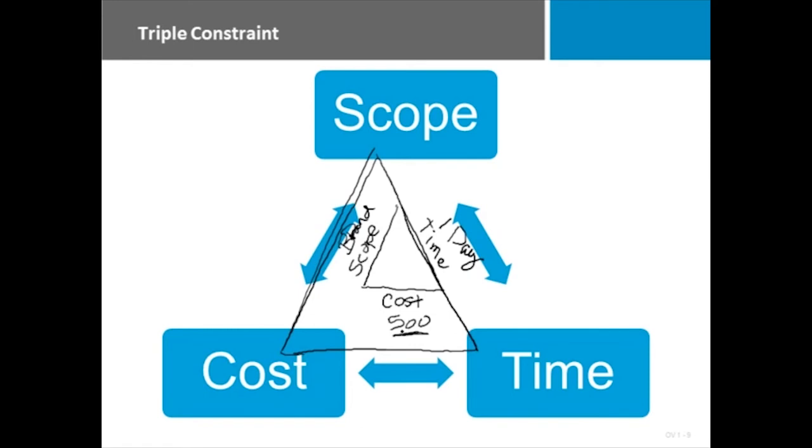If somebody says they're going to increase the cost, there's going to be ramifications. Probably the scope is changing, the cost is increasing because they've got more to do, they determined that we forgot some step in the process, something like that, and it's usually going to take more time.